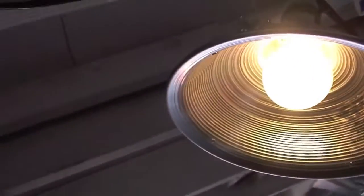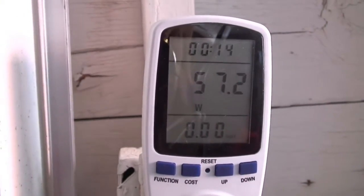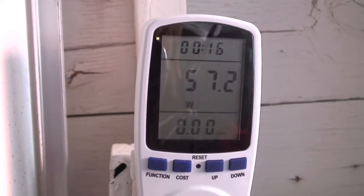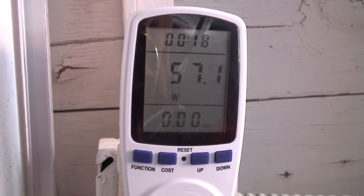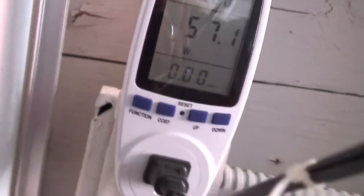We have light. We're pulling 57.2 watts on this light bulb. We're going to switch it off.